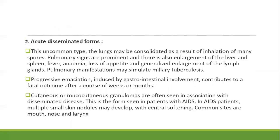The acute disseminated form is relatively uncommon. The lungs may be consolidated as a part of inhalation of many spores, with prominent pulmonary signs, and in addition there is enlargement of the liver and spleen with fever, anemia, loss of appetite, and generalized lymphadenopathy. The pulmonary manifestations simulate miliary tuberculosis. There is progressive emaciation induced by gastrointestinal involvement that contributes to the fatal outcome after a course of weeks or months.